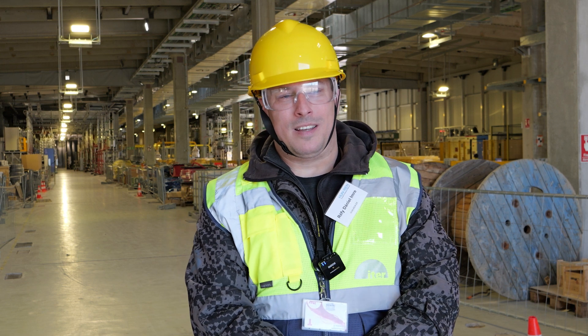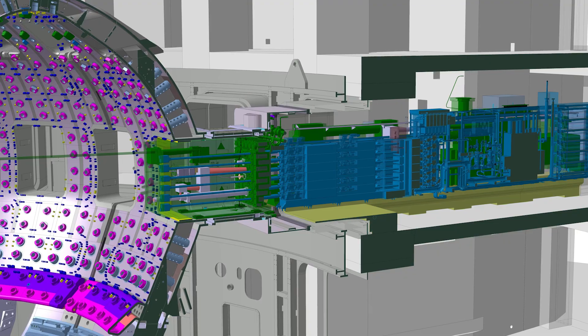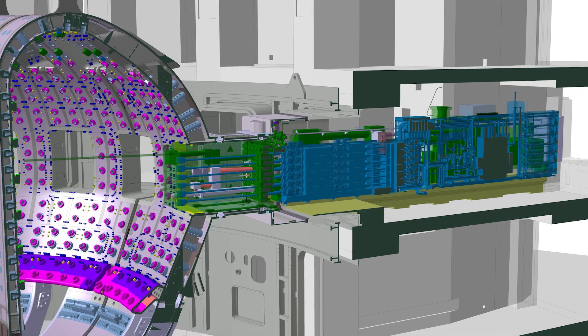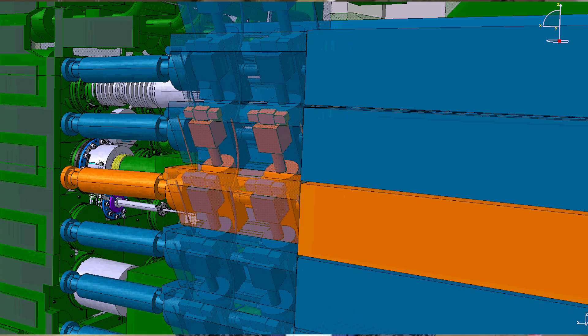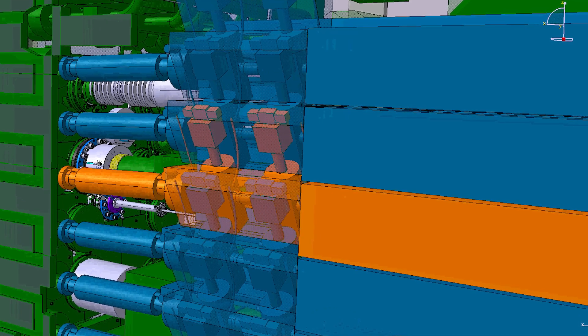ITER can have off-normal events which are called disruptions which pose huge risk for the machine's integrity, which must be somehow mitigated. And this is the so-called disruption mitigation system, which consists of 27 pellet injectors.